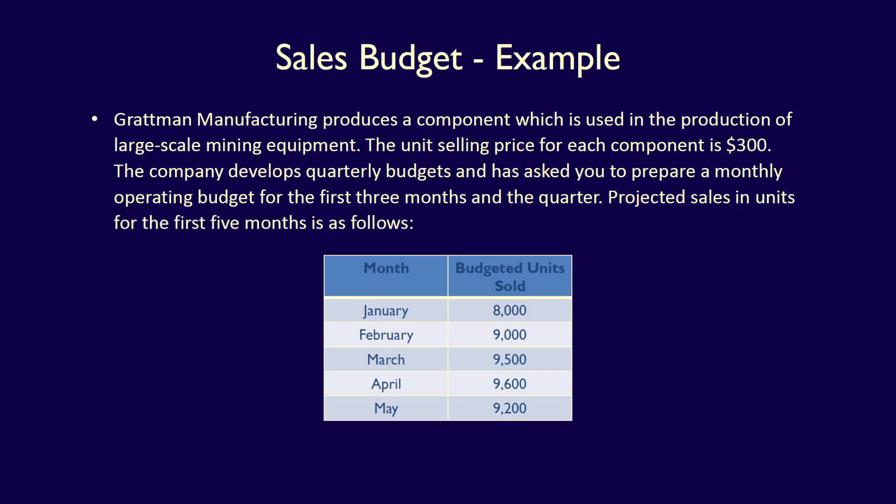Let's use an example to demonstrate the sales budget process. Gratman Manufacturing produces a component which is used in the production of large-scale mining equipment. The unit selling price for each component is $300. The company develops quarterly budgets and has asked you to prepare a monthly operating budget for the first three months and the quarter. Projected sales in units for the first five months are as follows.